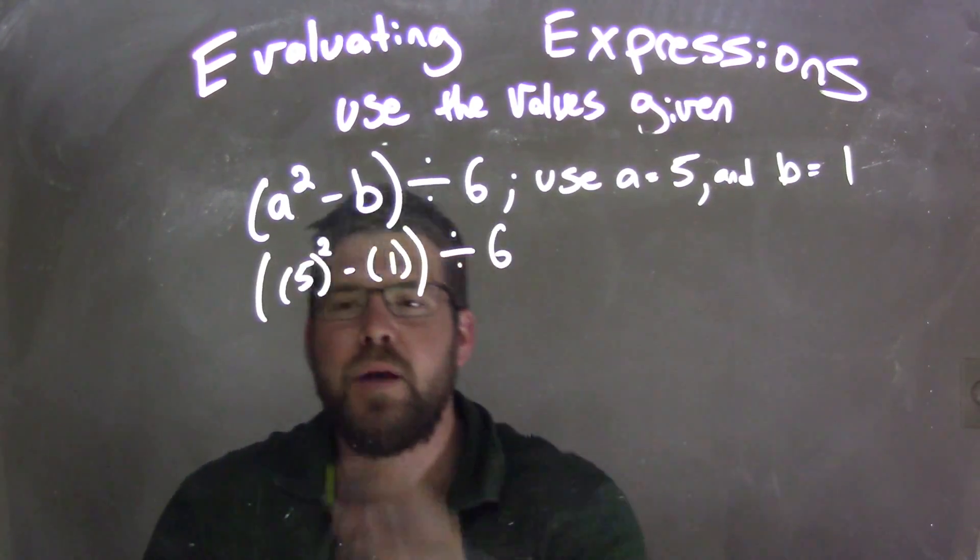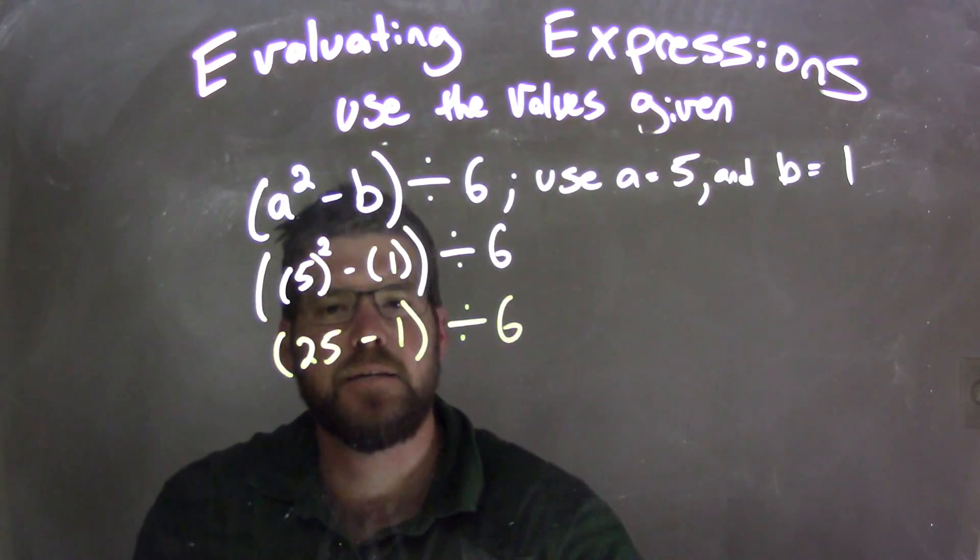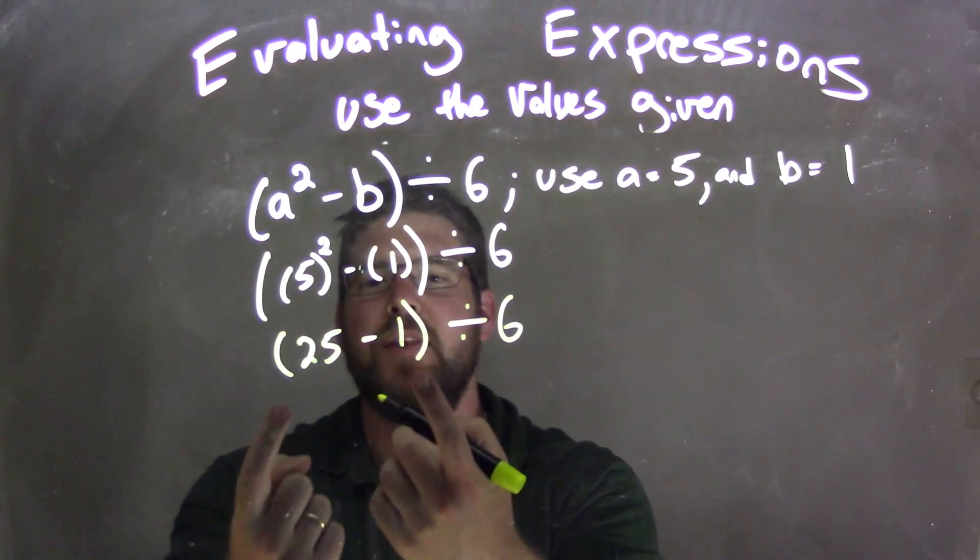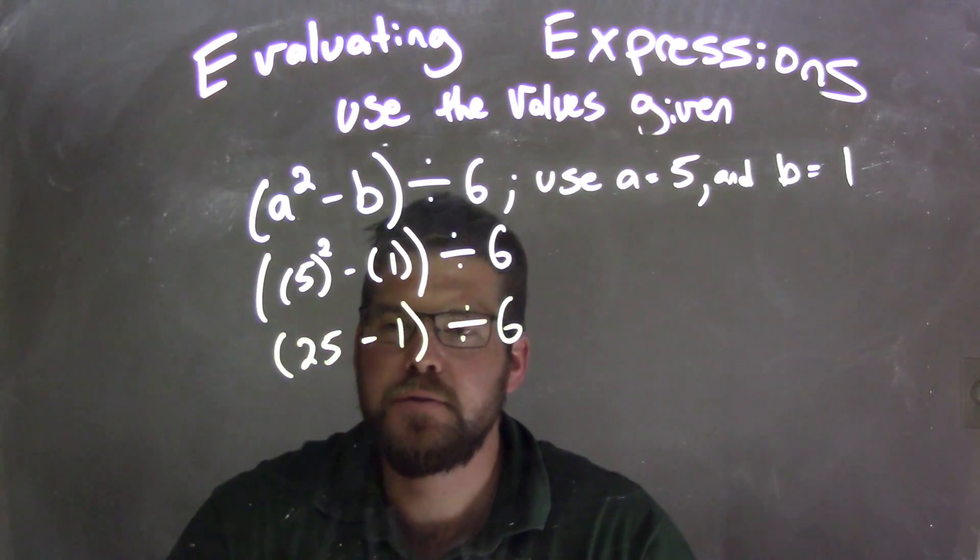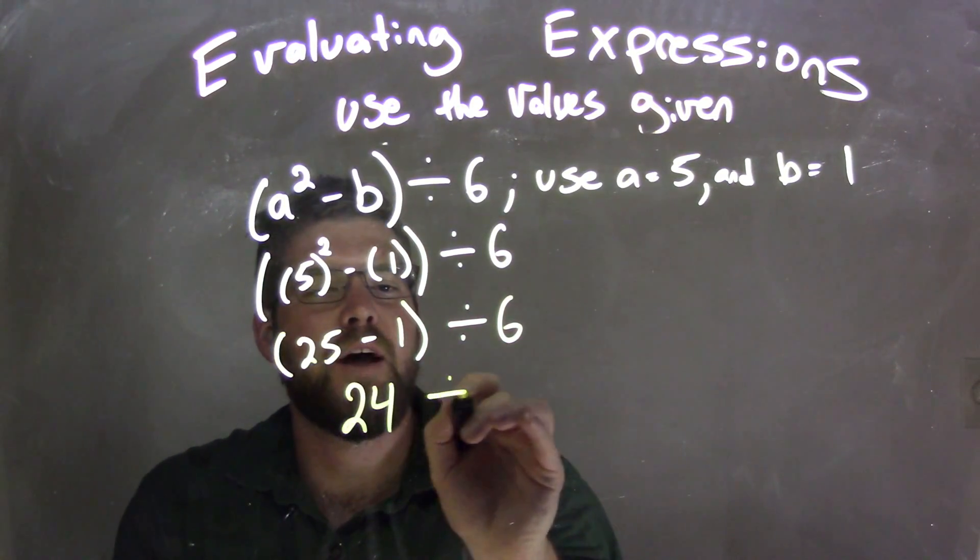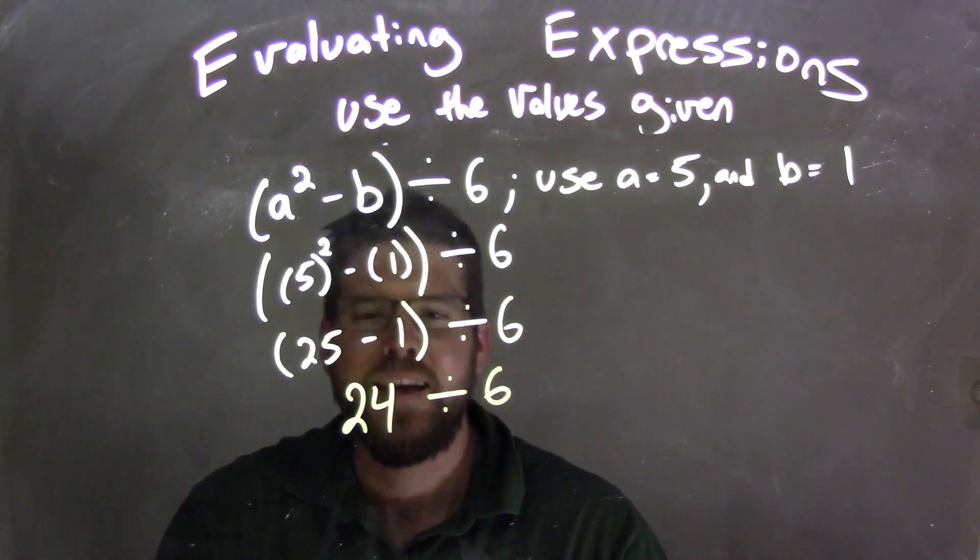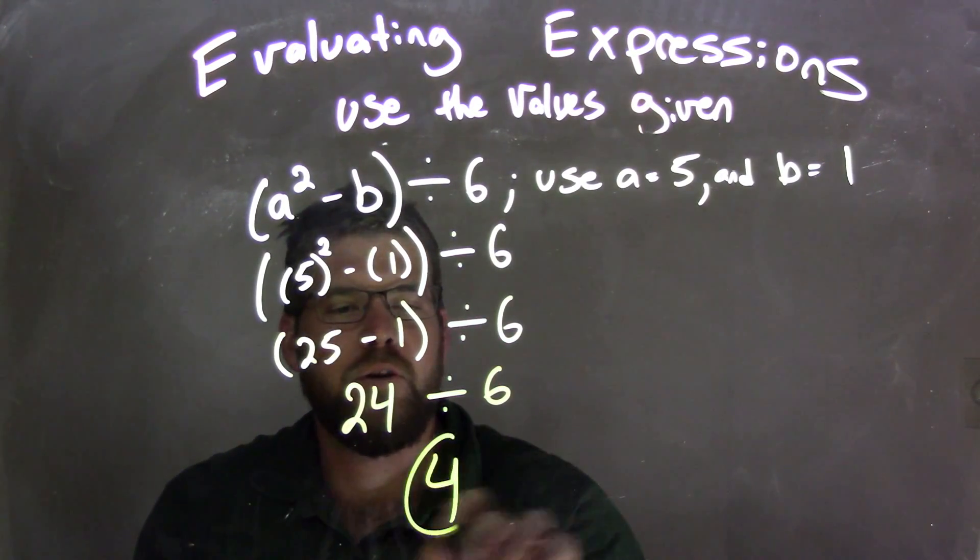So 5 squared comes out to be 25 minus 1 divided by 6. So now we're inside these parentheses, we need to deal with that first. 25 minus 1 comes out to be 24 divided by 6. And lastly, 24 divided by 6 is what's left and that comes out to be good old 4.